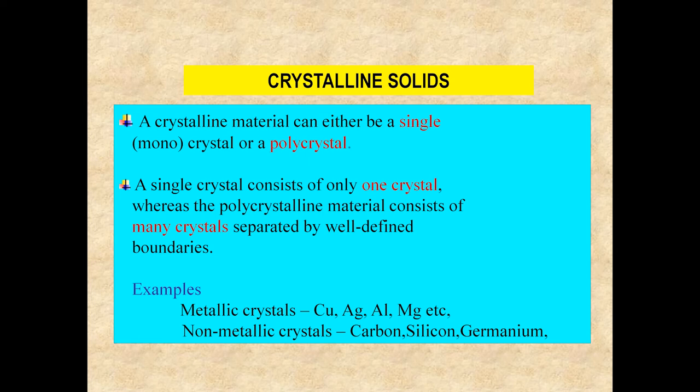A crystalline material can be either a single crystal (monocrystal) or a polycrystal. A single crystal consists of only one crystal, whereas a polycrystalline material consists of many crystals separated by well-defined boundaries. Examples of metallic crystals include copper, silver, aluminium, and magnesium. Non-metallic crystals include carbon, silicon, and germanium.